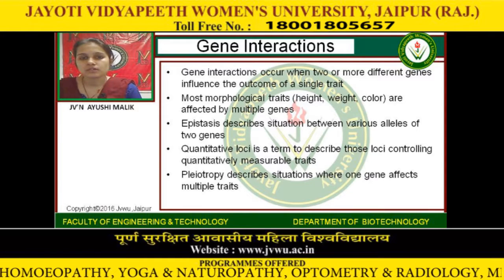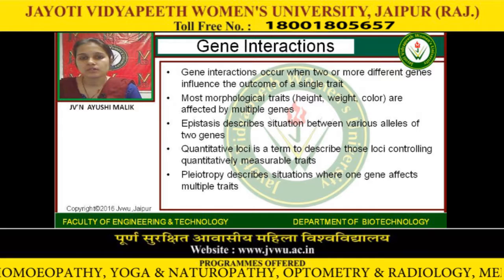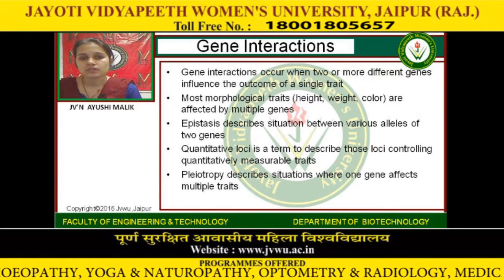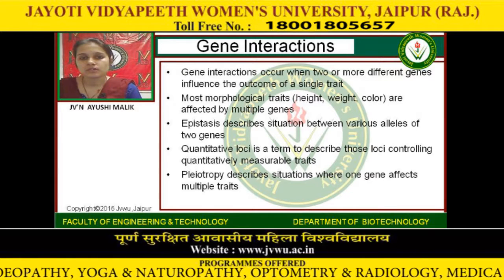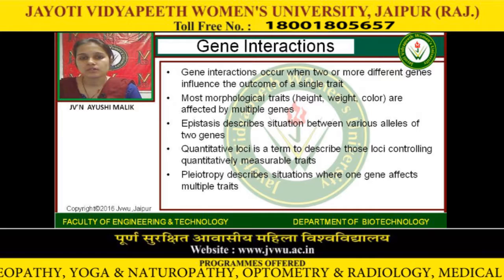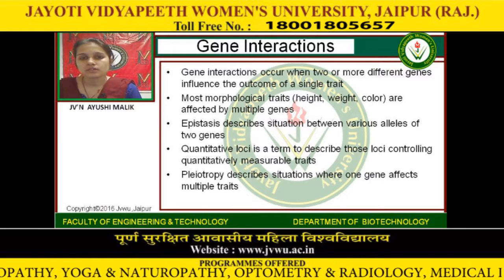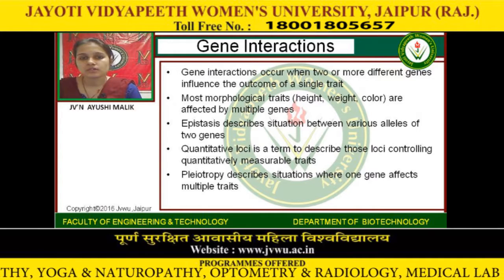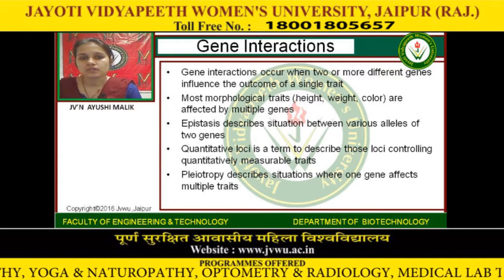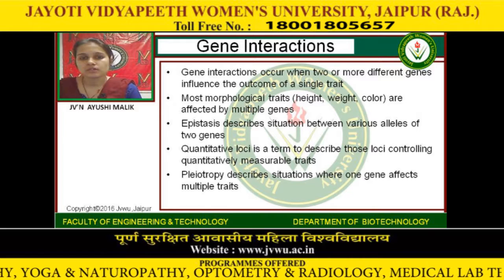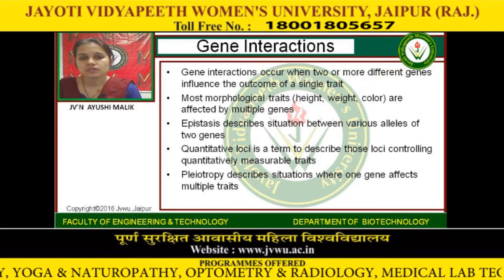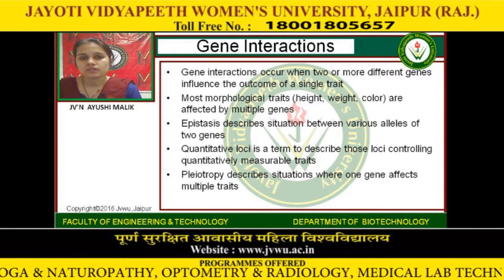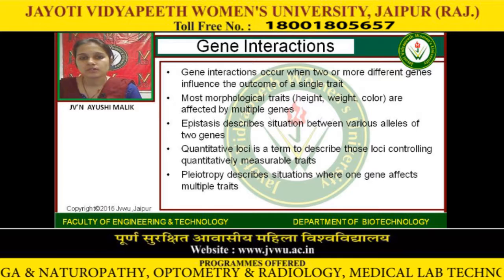A study describes the situation between various alleles of two genes. Quantitative loci is a term to describe those loci controlling quantitatively measurable traits. Pleiotropy describes the situation where one gene affects multiple traits.